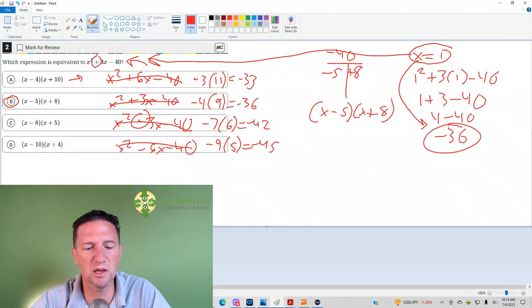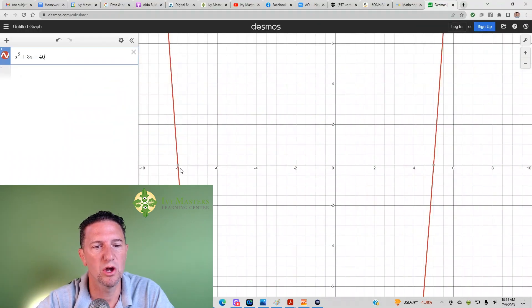Last way you could solve it is you could plug it right into Desmos. So if you plug it into Desmos, you could just hover over the x-intercept. And you see that it's negative 8. If negative 8, 0 is a point on the parabola, then it's got to be x plus 8.